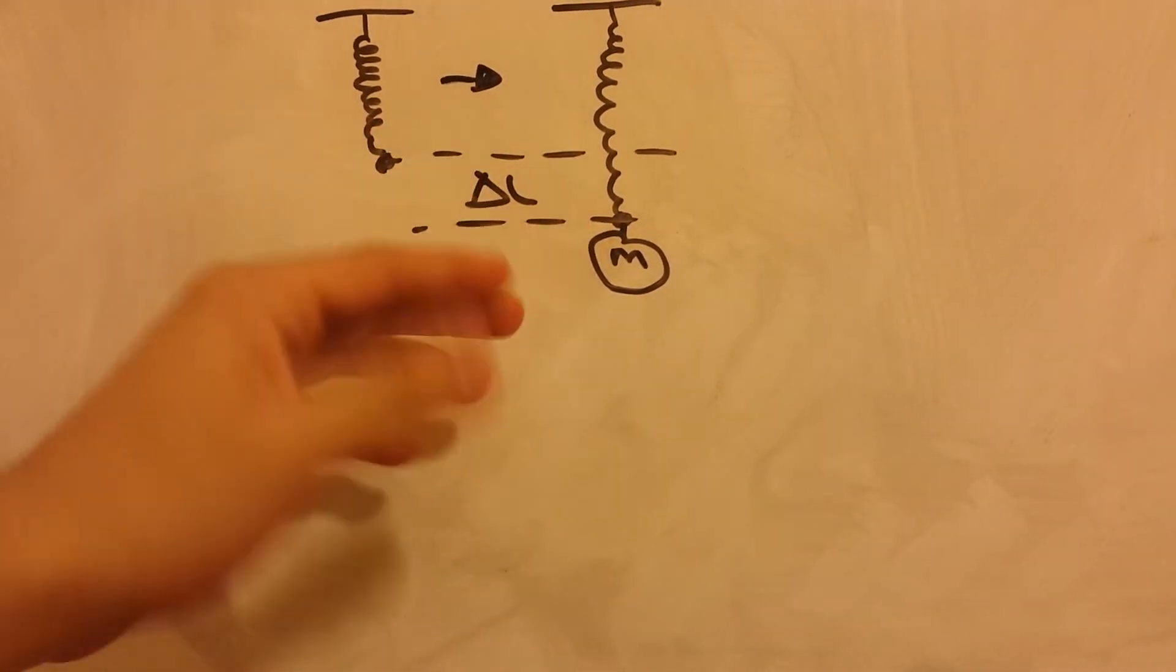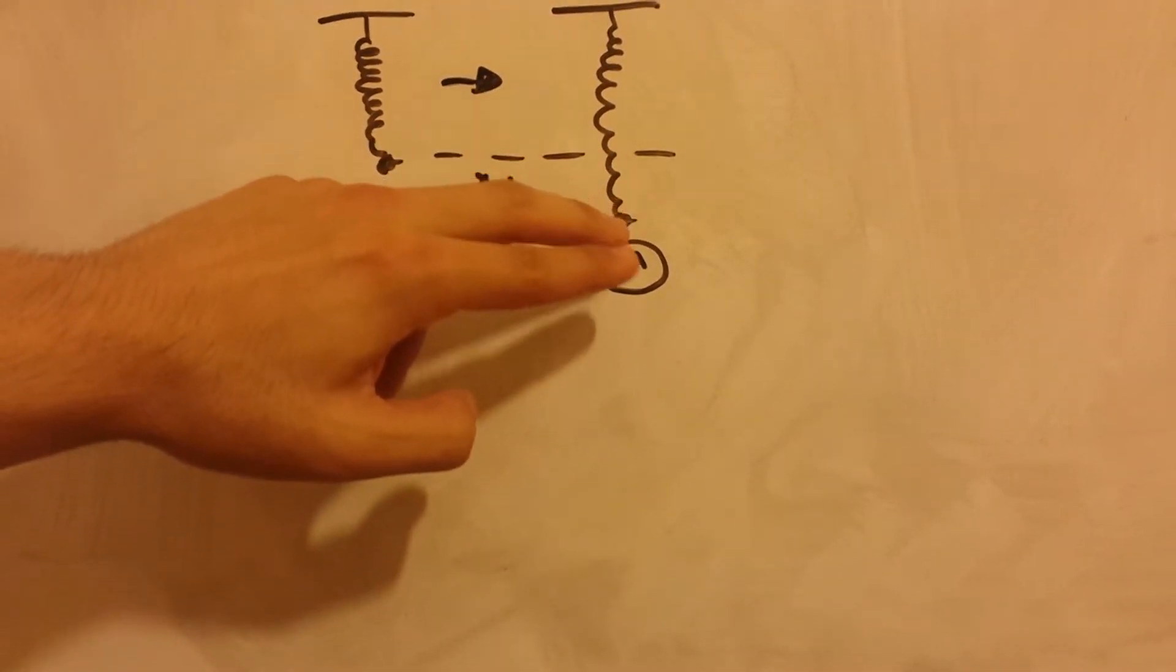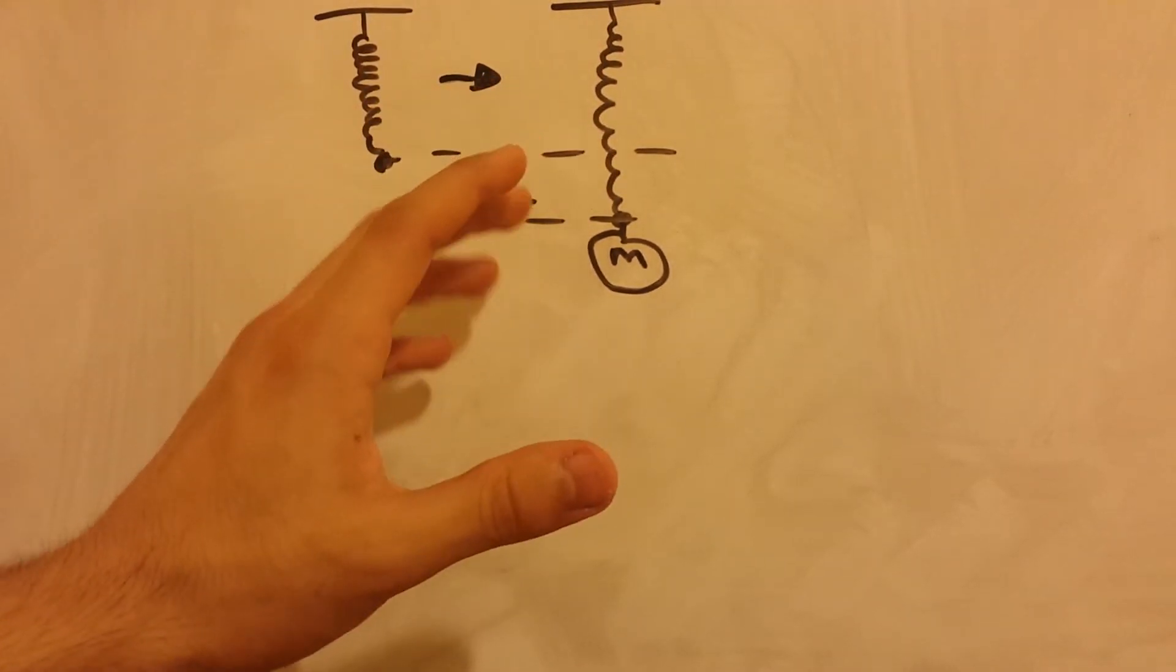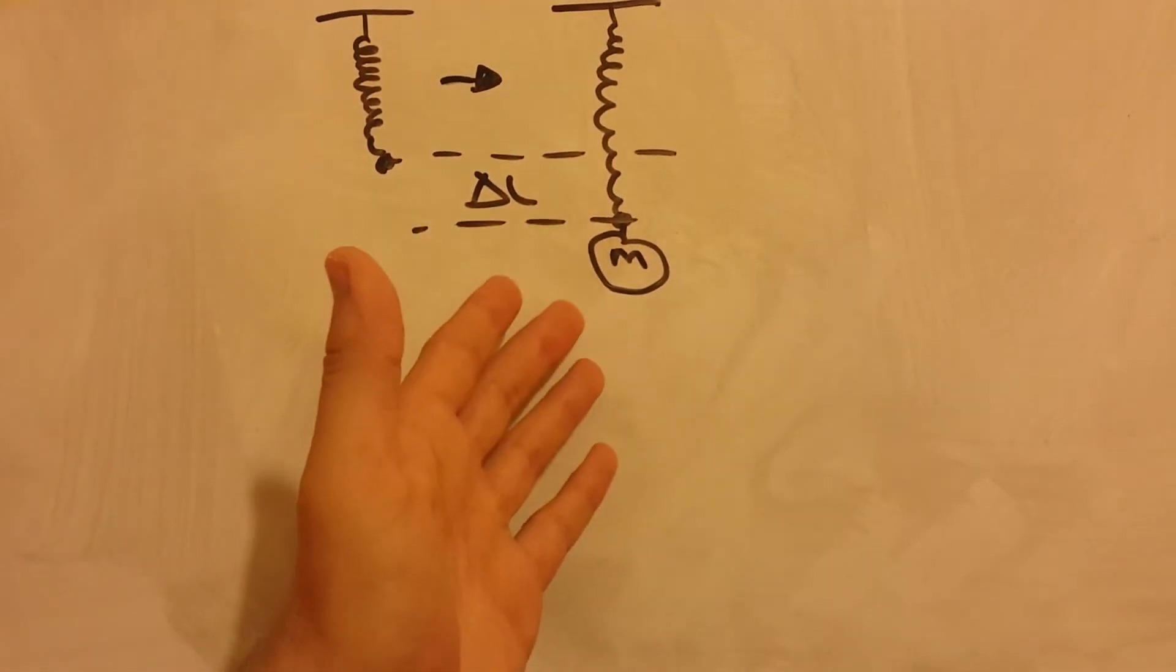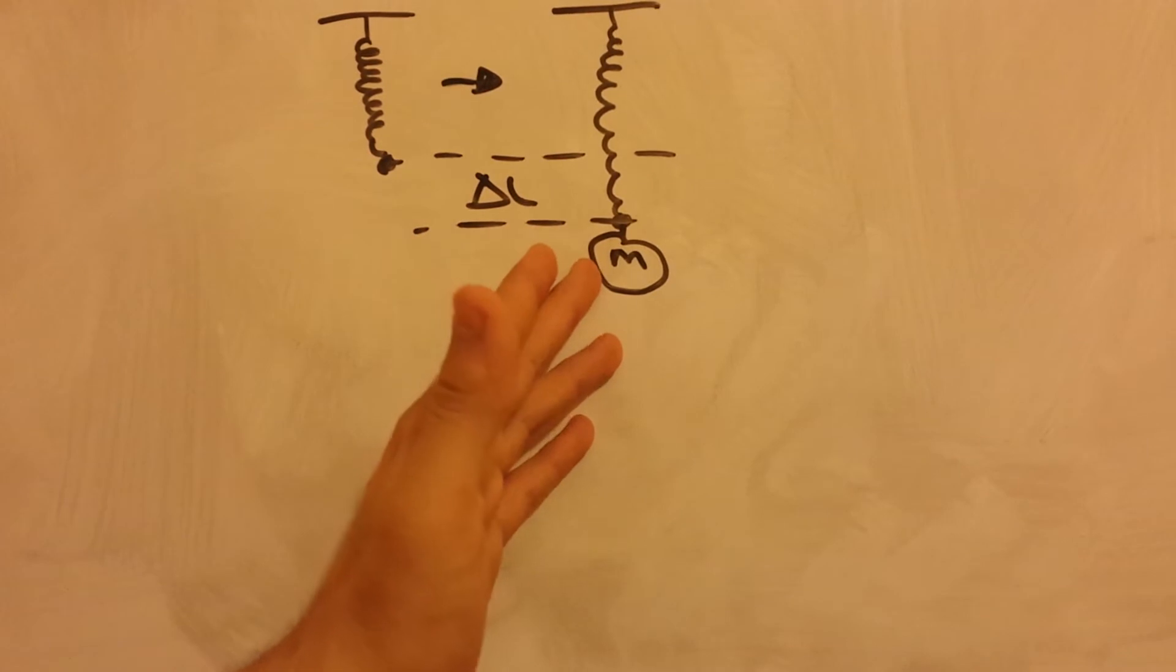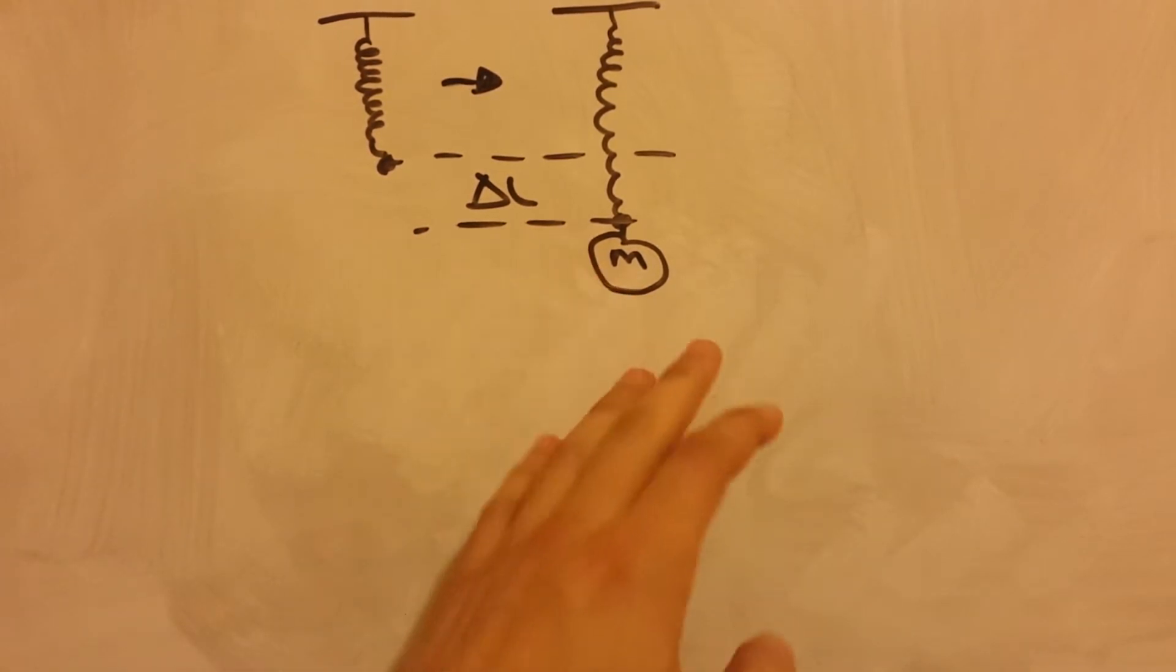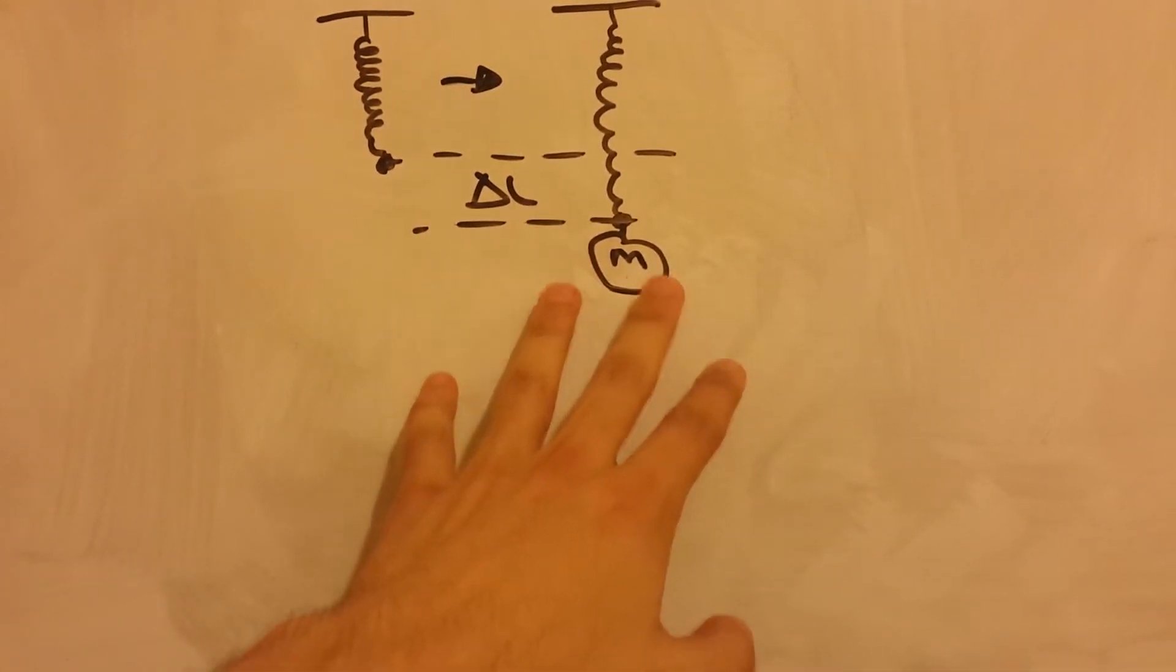And this system, so the spring is not extending, I mean the system is in equilibrium position at the moment. So we just attach the mass. We attach the mass and there's that equilibrium position.